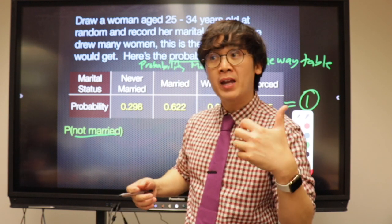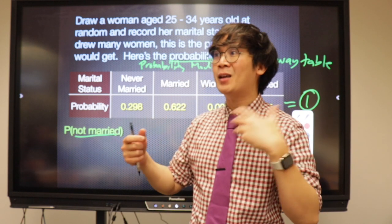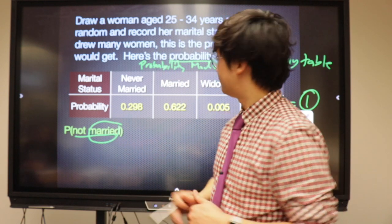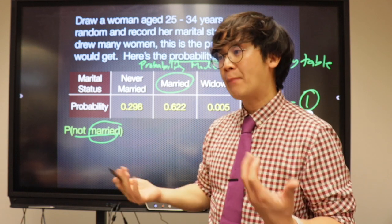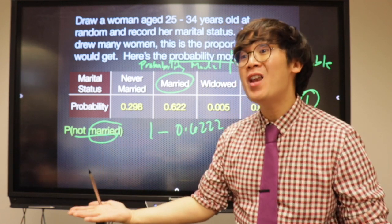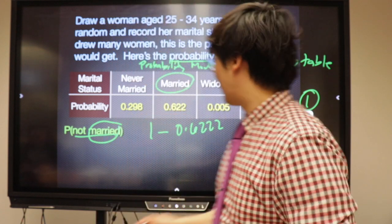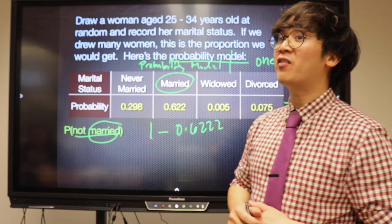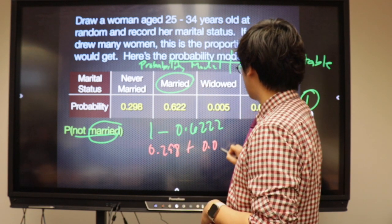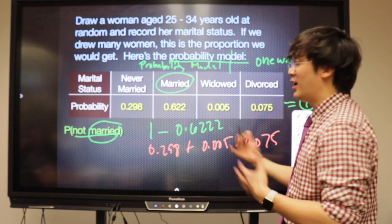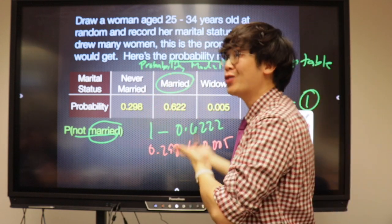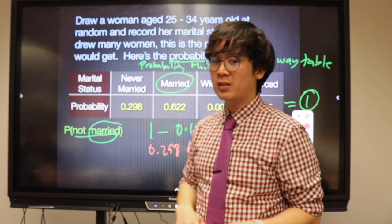One way is using the complement of an event — the 'not.' The complement is the missing part of a whole. The operative word is 'married,' and we subtract the probability of being married. Another way is adding all the non-married categories together: 0.298 + 0.005 + 0.075.